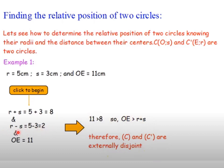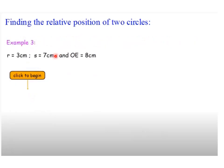R plus S equals 8, R minus S equals 2, and the distance OE is 11. Since 11 is greater than 8, OE is greater than R plus S — therefore C and C′ are externally disjoint. Only one case from the five will be true — in this case it is OE greater than R plus S.